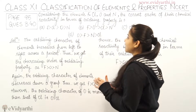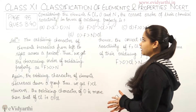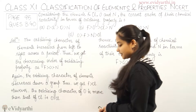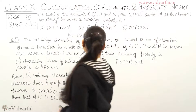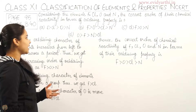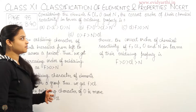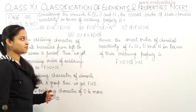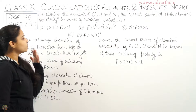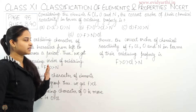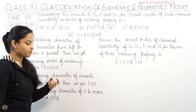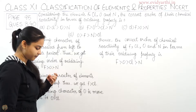The question is: considering the elements fluorine, chlorine, oxygen and nitrogen, the correct order of their chemical reactivity in terms of oxidizing property is — four options have been given and we need to select the one correct option.